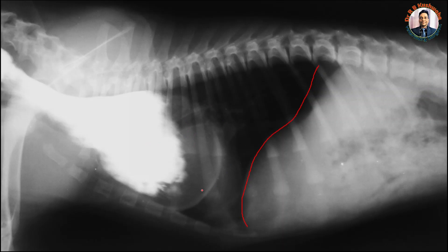The puppy does not show signs while maintained on milk. But once the animal is shifted from milk to solid or semi-solid diet, the animal starts showing signs. In such cases, there is regurgitation and also respiratory distress because of this distension of the esophagus, which causes pressure on the lungs.